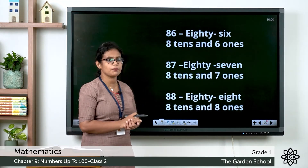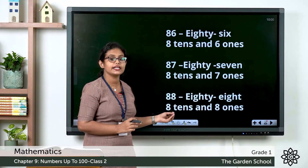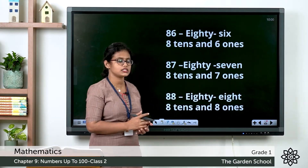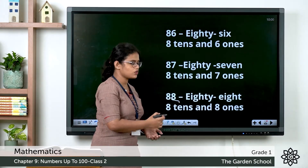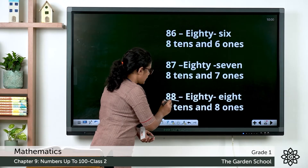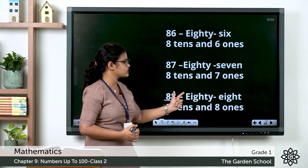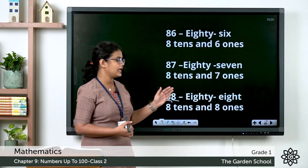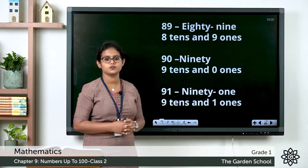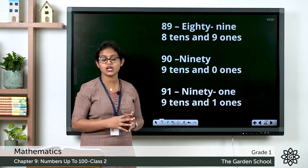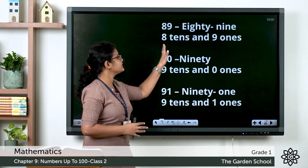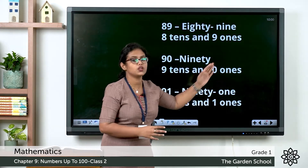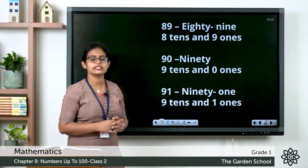Which is the next number after 87? It is 88. So what is the place value of the digit 8 in ones? 1s. And in tens place? Tens. So 8 tens and 8 ones makes 88. Which is the next number after 88? It is 89 — 8 tens and 9 ones, that makes 89.